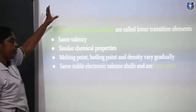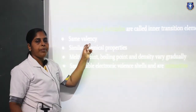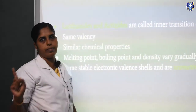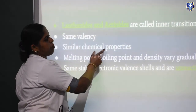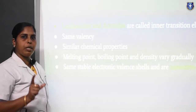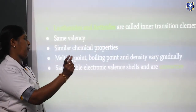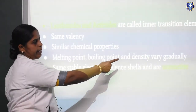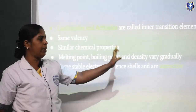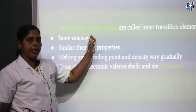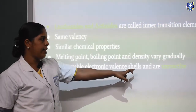Regarding group properties: from first to last member of a group, they possess the same valency. Valency means the number of electrons in the last shell. The valency is responsible for the reaction of that element. All members in a group possess similar chemical properties because their valencies are the same. In the case of physical properties — melting point, boiling point, and density — they vary gradually from top to bottom.